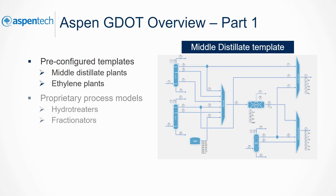GDOT also has pre-programmed proprietary process models for complex units such as hydrotreaters and fractionators. Real-time optimizers of the past were very difficult to maintain as the scope of the optimizer grew. With the combined planning and dynamic models, GDOT can be easily deployed and maintained on larger envelopes.